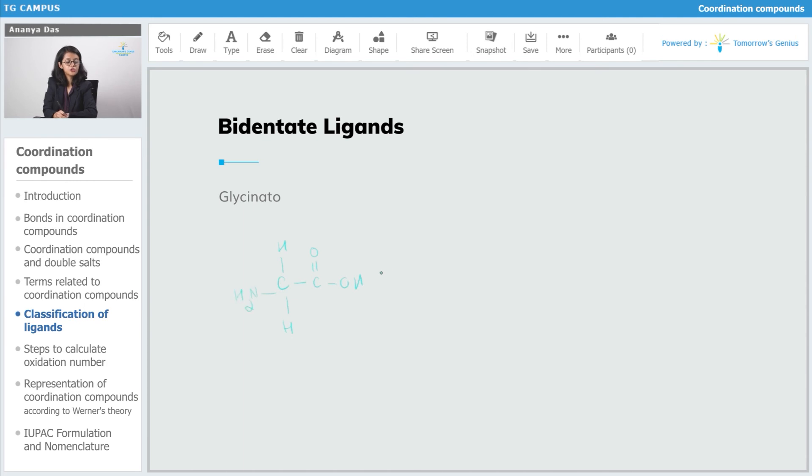Upon abstraction of a proton from the carboxylic acid part, we get glycinato.